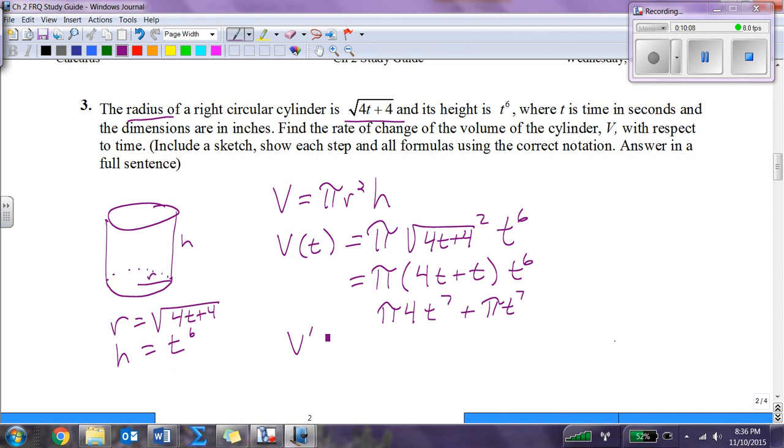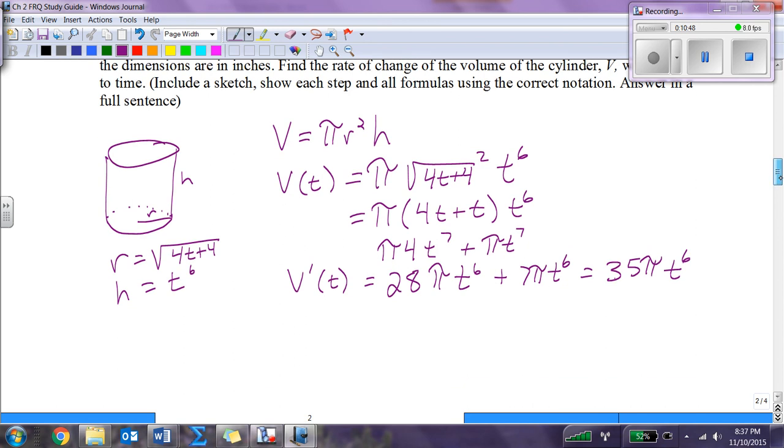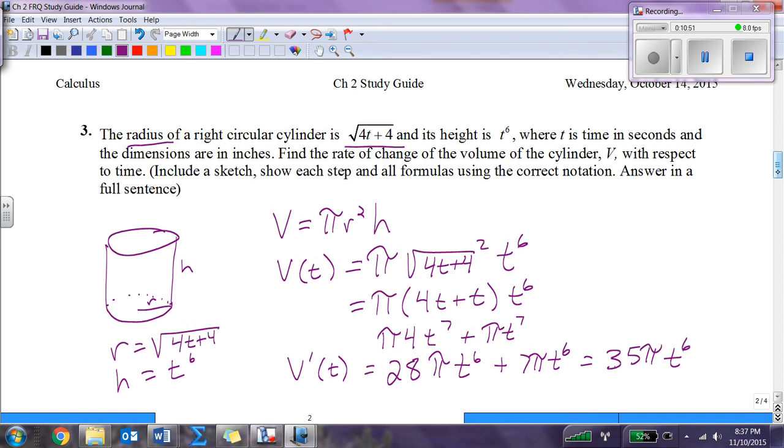Now I can find the derivative quite easily. V prime change in volume is, I bring the 7 down front, so I have 4 times 7 is 28, so 28 pi t to the sixth plus 7 pi t to the sixth. Well there's two pi t to the sixths, so I have 28 and 7 is 35 pi t to the sixth. That's the velocity at time t. They're not giving me a specific time, so that's my answer.